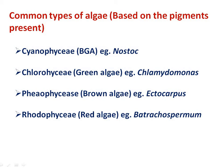The color of Chlorophyceae algae is green because of the presence of the green pigment chlorophyll. Examples of green algae are Chlamydomonas and Chlorella. The third group is Phaeophyceae — the color of this algae is brown because of the presence of a pigment fucoxanthin. The example of brown algae is Ectocarpus. The next group is Rhodophyceae — the color of this group is red because of the presence of a pigment phycoerythrin. The example of red algae is Batrachospermum.